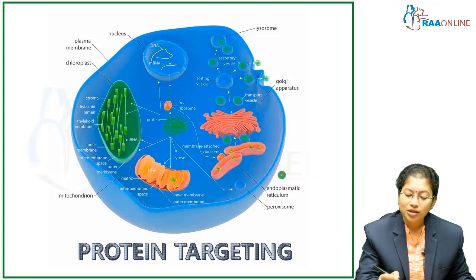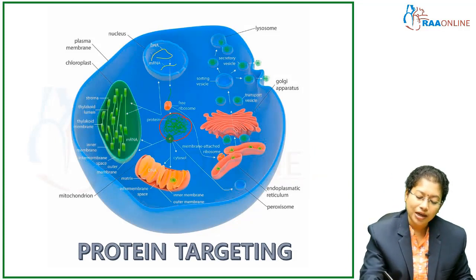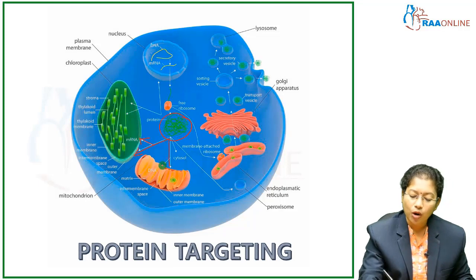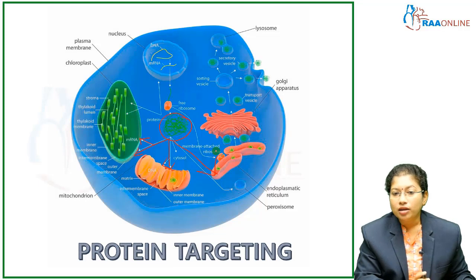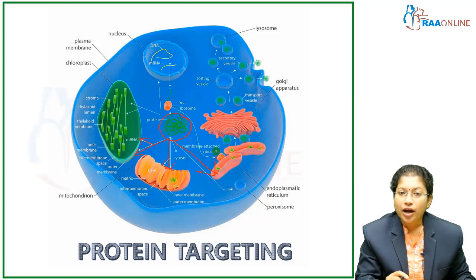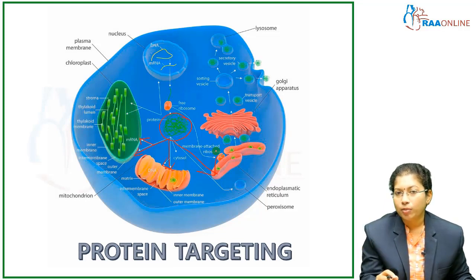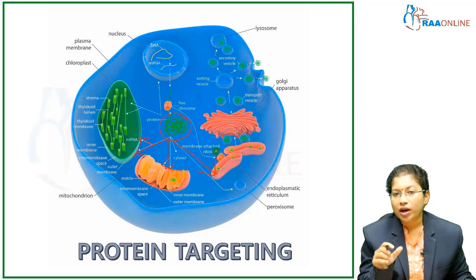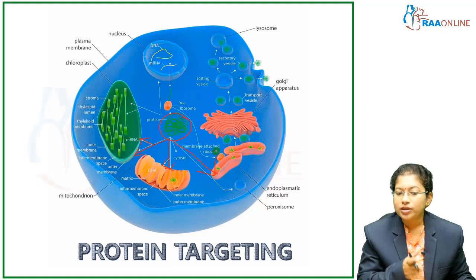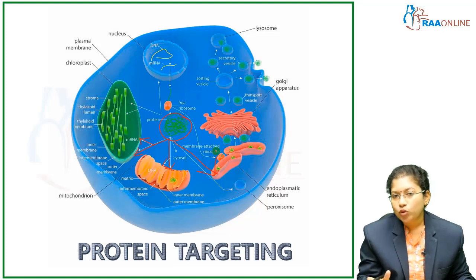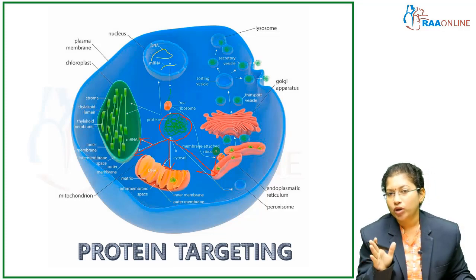Protein targeting means once the protein is synthesized, it has to move to its proper destination. It is synthesized in the ribosome. The ribosome may be a free ribosome, or it may be attached to the endoplasmic reticulum. If a ribosome is attached to the endoplasmic reticulum, we call that a rough endoplasmic reticulum. Endoplasmic reticulum is of two types: rough and smooth. Rough means it has ribosomes; smooth means there are no ribosomes attached.